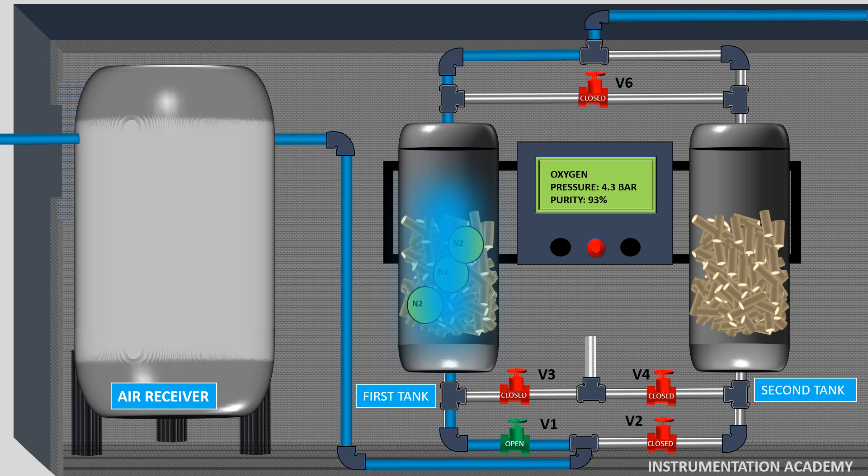Just before the zeolite in the first tank becomes saturated with nitrogen, the process switches oxygen generation to the other adsorption tank, the second tank. The inlet compressed air is diverted to the second adsorption tank through valve V2. At the same time valve V1 gets closed. The inlet compressed air will take some time to pressurize the second tank. To avoid this time delay, pressure equalization valve V6 is opened so that the pressure in the first tank and the second tank equalizes.